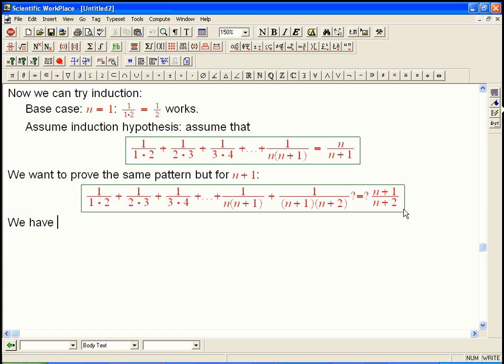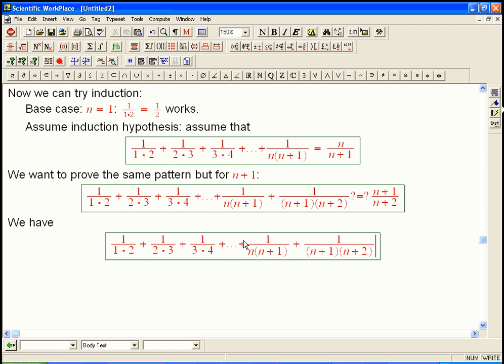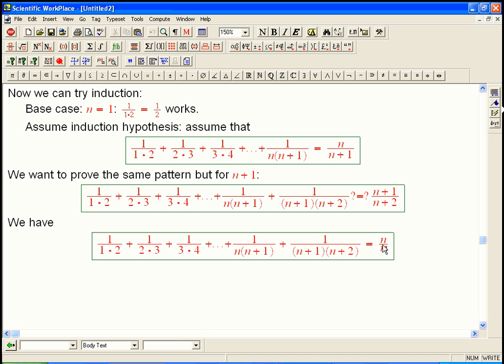So we have the left hand side, we're going to write it down. Just writing it down is something we can do, we're not asserting anything about it yet. Then I'm going to realize that the assumption is that we do know a shortcut for most of this huge expression. We're assuming that the shortcut works if we don't quite include that last term, and so we can replace that with just n over n plus 1, the shortcut for the previous case, plus the only thing that's new, which is this guy.